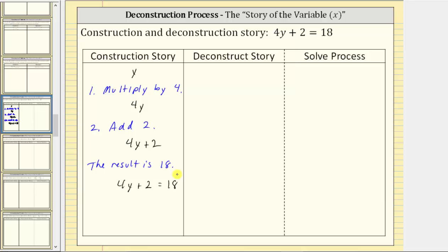Our goal here is to solve the equation, which means find the value of y that satisfies this equation. In order to solve for y, we need to deconstruct this equation. To do this, we are going to undo the steps of the construction process. To undo the construction process, we reverse the order and undo the operations of these two steps.